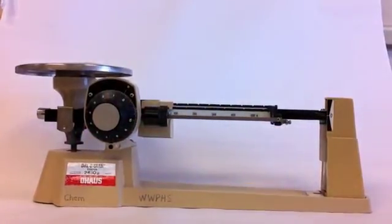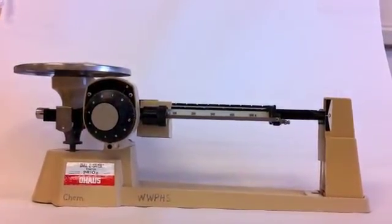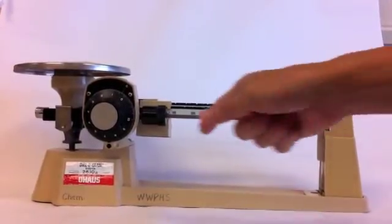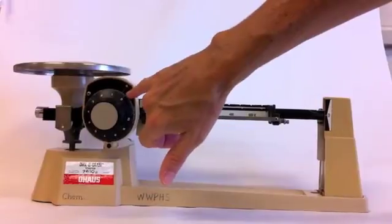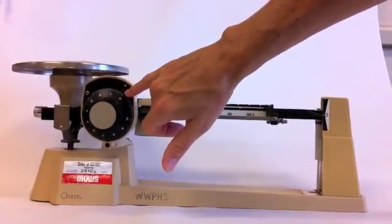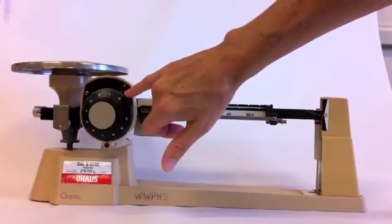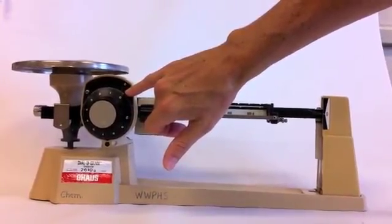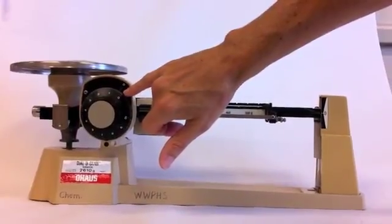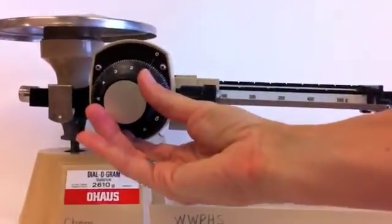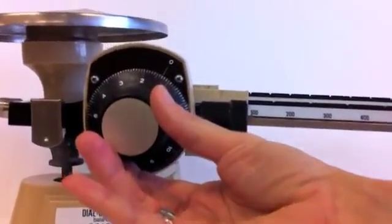And now, let's say I need one gram of salt. All I need to do, since it's at zero, is look at this. Right now, my weighing paper is approximately 0.3 grams. And I want one gram of salt. So, my final mass is going to be 1.3 grams. So, I'm going to use my dial-o-gram and move it to 1.3 grams.